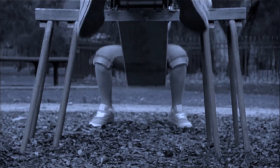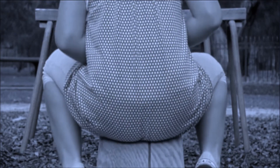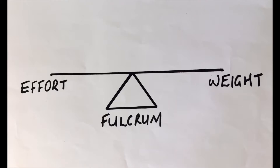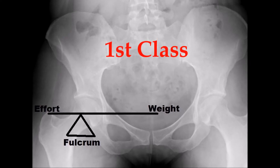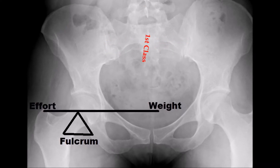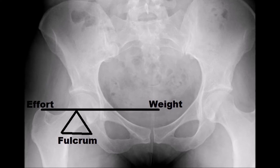A lever is a simple machine that enables an applied force to overcome a given resistance. It has a fulcrum, effort, and weight. There are three types of levers: first, second, and third class levers. The abductor mechanism of the hip is a first class lever, meaning it has its fulcrum situated between the effort and the weight.